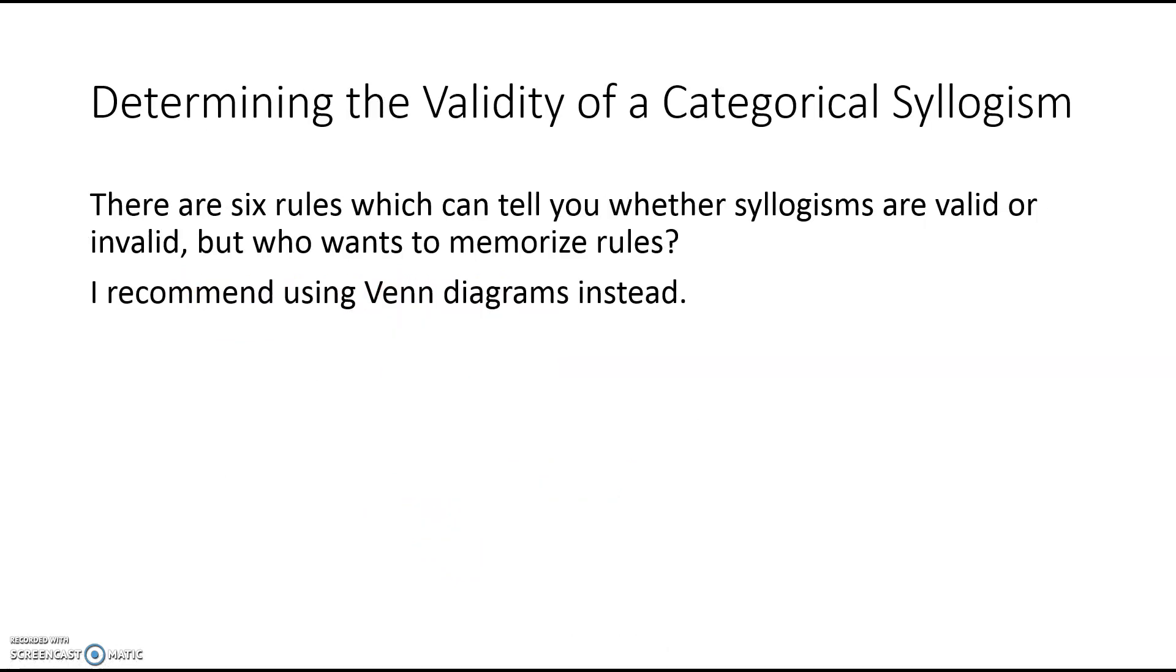Now here's the action. Here's what we care about. How can I determine whether a categorical syllogism, a categorical argument, is valid or not logically? You could memorize a bunch of really tedious rules. I recommend drawing pictures, namely Venn diagrams, instead. Let me show you how this works.